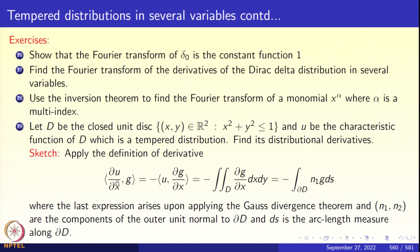The distribution del u/del x is obtained by restricting g to the circle x^2 + y^2 = 1 and integrating n_1 g ds. Now compute x(del u/del x) + y(del u/del y) and y(del u/del x) - x(del u/del y). In one case you will get 0, and in the other you will get something interesting. I leave it to you to complete the problem.